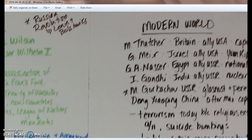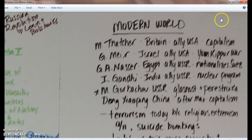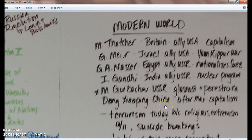Modern-day leaders to keep in mind: Margaret Thatcher is in Britain, an ally of the U.S. Golda Meir in Israel, also an ally of the U.S., fights the Yom Kippur War. Gamal Abdel Nasser in Egypt, ally of the Soviet Union, nationalizes the Suez Canal. Indira Gandhi builds a nuclear program in India, allies with the Soviet Union. Mikhail Gorbachev is the last leader of the Soviet Union — remember LSG: Lenin, Stalin, Gorbachev. Gorbachev does glasnost and perestroika, and is compared to Deng Xiaoping in China, who rules after Mao and brings in capitalism.